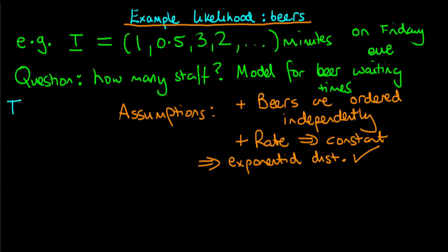So mathematically, how would we write this? Well, we'd write that the time for data point i, where i is going from 1 up to n, so we record n waiting times, is being distributed exponentially. And the exponential distribution just has one parameter which is typically called lambda, and lambda is a rate parameter. In this example, it would represent the number of beers that are ordered per minute on average.